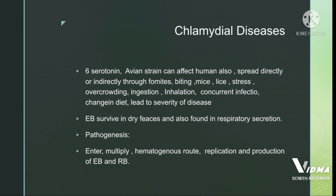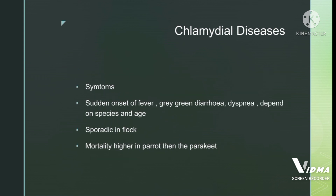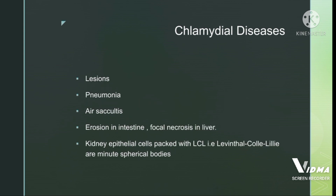Elementary bodies survive in dry phases due to the presence of disulfide bonds and are also found in respiratory secretions. Pathogenesis involves entry, multiplication, hematogenous spread, and production of elementary and reticulate bodies. Symptoms include sudden onset of fever, grey-green diarrhea, and dyspnea, varying by species and age; disease is sporadic in flocks with higher mortality in parrots than parakeets. Lesions include pneumonia, pericarditis, erosions in the intestine and enteritis, consolidation or focal necrosis in the liver and kidney. Kidney epithelial cells packed with LCL (Levinthal-Coles-Lillie) minute spherical bodies confirm chlamydal disease as the cause of death.